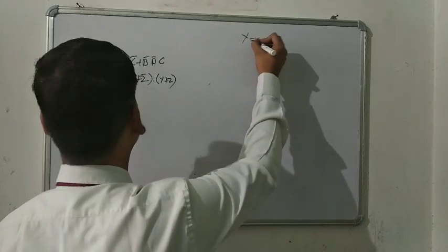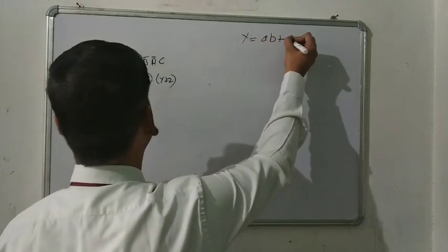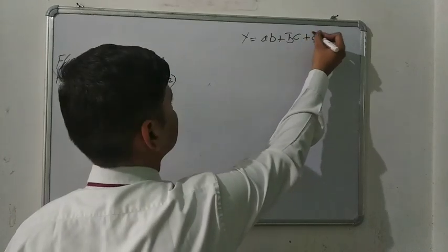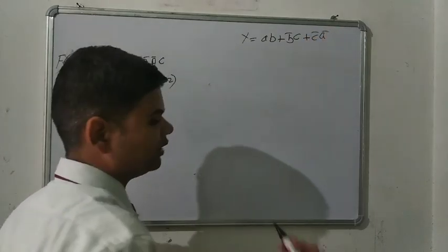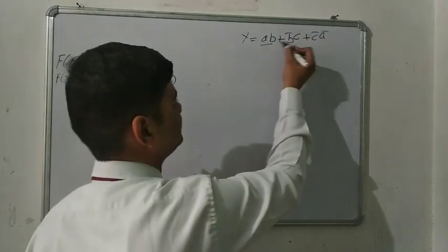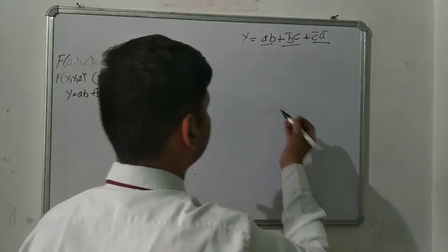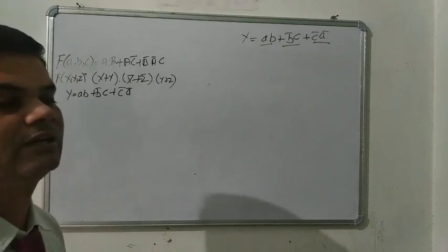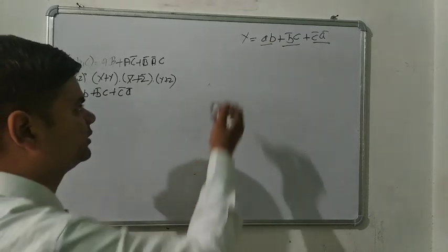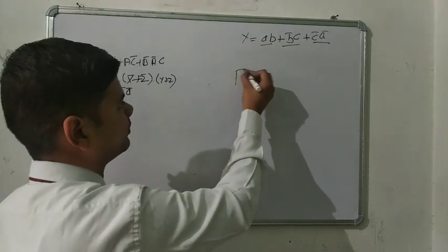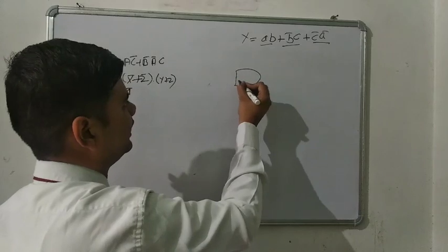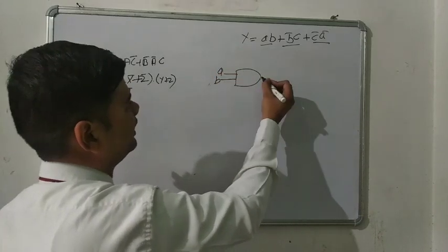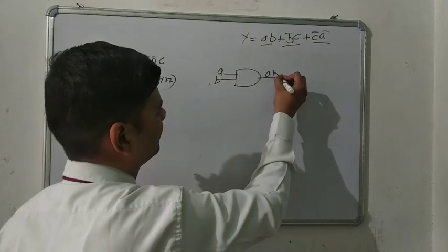The question is: Y = AB + B̄C + C̄Ā. Again in this example we take the first term AB, the second term B̄C, and the third term C̄Ā. For AB we are using the DOT sign — DOT sign means AND operator. So first we draw the AND operator, taking two inputs A and B. Their output is AB.